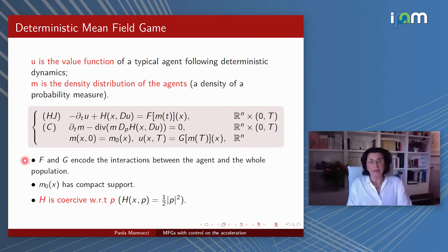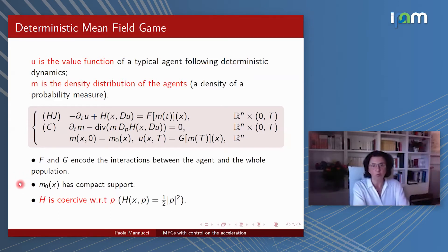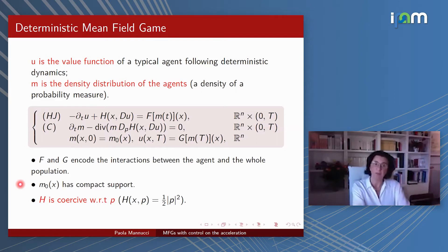We have an initial condition for M and a final condition for U. These two equations are coupled by capital F, and another coupling appears in the final condition. Capital F and capital G represent the interactions between the agent and the population. The initial distribution M0 has compact support. This type of deterministic mean field game is mostly studied where H is coercive with respect to P — the simplest case being H equals P squared.